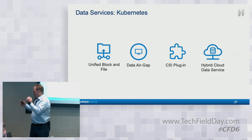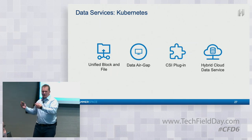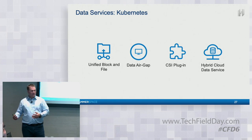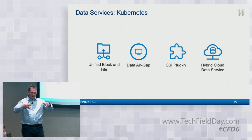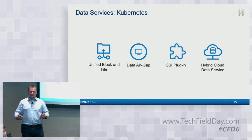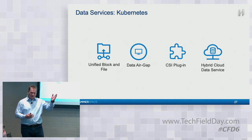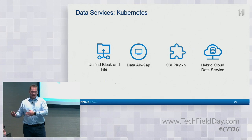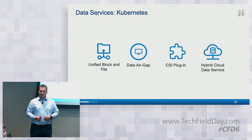You take an old 3PAR, an old Hitachi, and a very new Pure, and you simply fold them into Hammerspace. Hammerspace acts as the mechanism to store data on those storage devices, yet managing the metadata and the Kubernetes connectivity into that. Customers get really excited about this, because they can take whatever they have and just start using Kubernetes.